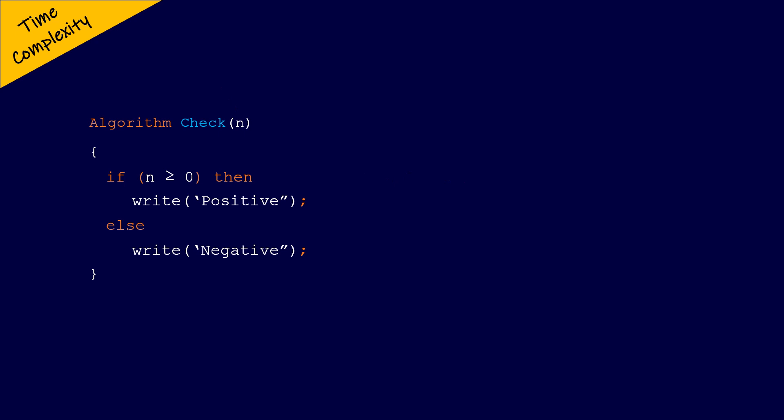Suppose if the number n is passed as negative 3, then the condition in the if-else structure is false, so the statement inside the if structure will not be executed. But the statement inside the else structure will be executed — that is, the write function which outputs the result as negative. Now since the if condition is executed only once, it is considered as a primitive or the basic statement, and will be taking unit time to execute, and its frequency is 1.